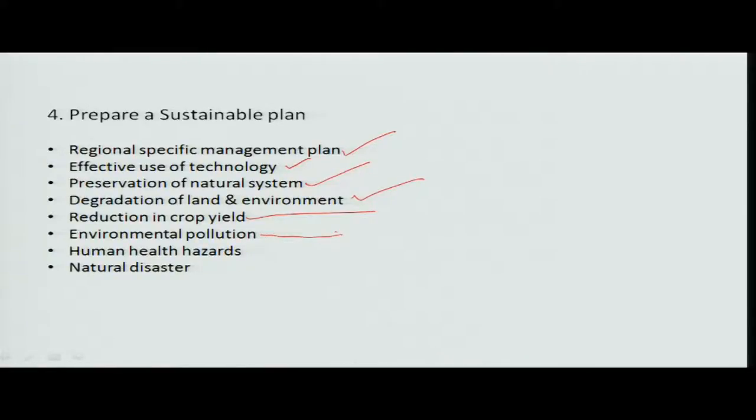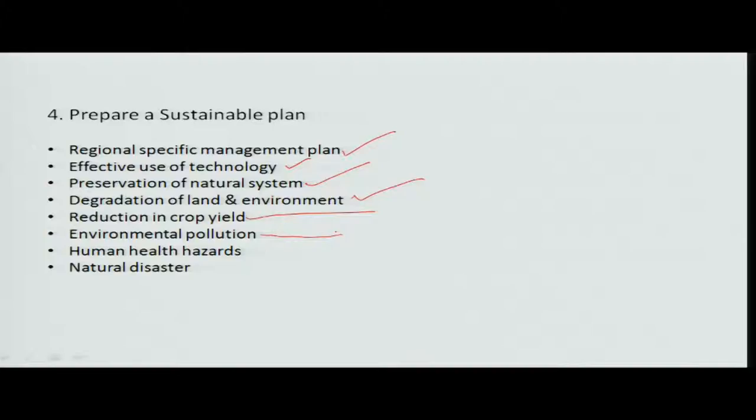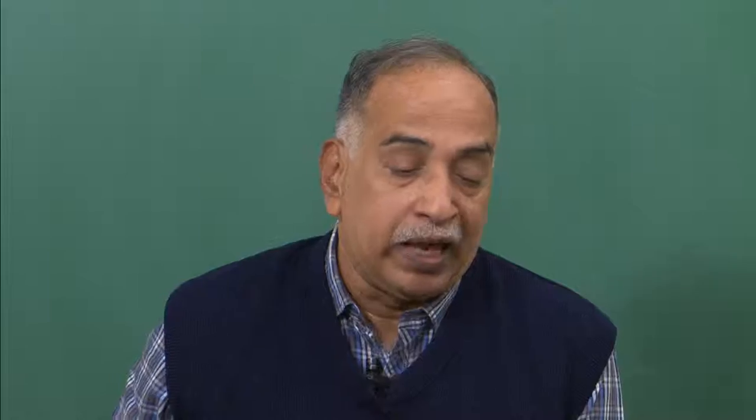Environmental pollution occurs when rain carries pesticides and fertilizers over large distances, storing them in ponds and causing environmental degradation. Groundwater can become enriched with nitrates and other elements, making it undrinkable in nearby areas. Health hazards and natural hazards can be identified and minimized by raising awareness, which helps contain damage to a lesser extent.